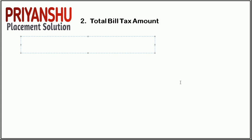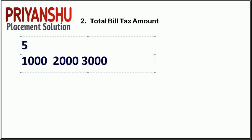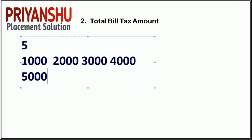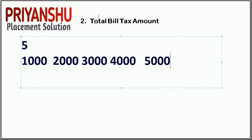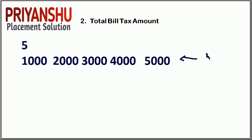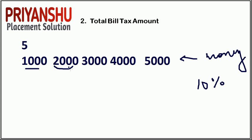In the total bill tax question, there are five inputs: 1000, 2000, 3000, 4000, and 5000. You need to find the total bill tax amount. The rule is: if the amount is greater than 1000, you need to pay 10% tax. For example, for 2000, we subtract 1000 first because no tax is paid on the first 1000, leaving 1000 taxable.